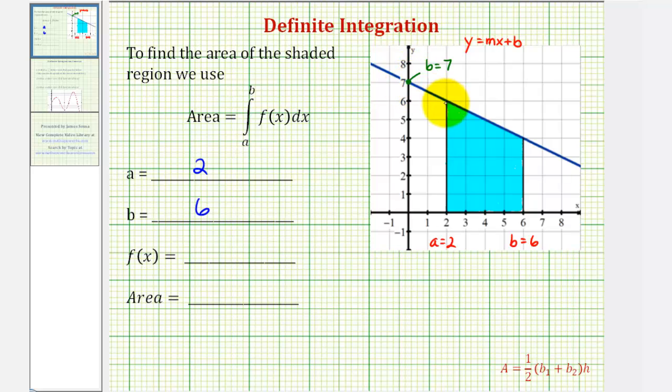If we use the y-intercept and this point here, we'd have to go down one unit, so the change in y is negative one, and then right two units, so the change in x is positive two. Therefore, the slope of the line is equal to negative one-half. So our function f(x) is equal to negative one-half x plus seven.